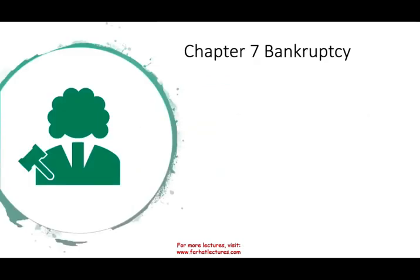Let's talk about Chapter 7 bankruptcy. In the prior session, we looked at options that a business would have in case they cannot pay their bills. One of the options was to voluntarily submit their assets for sale — voluntarily transfer their assets to a trustee. Another option, which is a more legal and formal option, is to file for bankruptcy. Specifically, we're going to be looking at Chapter 7 bankruptcy. Here, the business is closing its doors — liquidation. Chapter 7 bankruptcy means liquidation; we're going out of business.